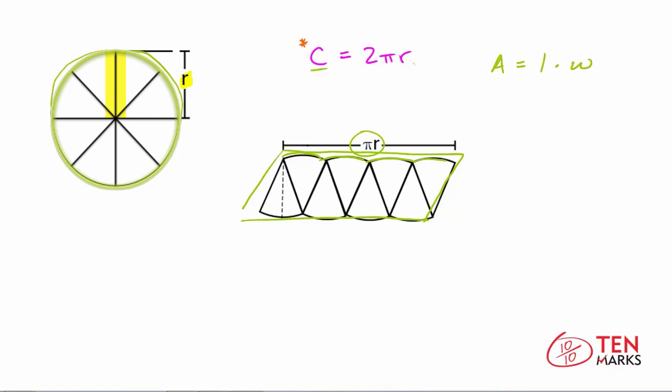So if you take 2πr and divide it in half, you get πr. So now you have the length of this parallelogram. What you need to think about next is what is the width. The width happens to be this line right here, which is the radius, because the height of the wedge is the radius.